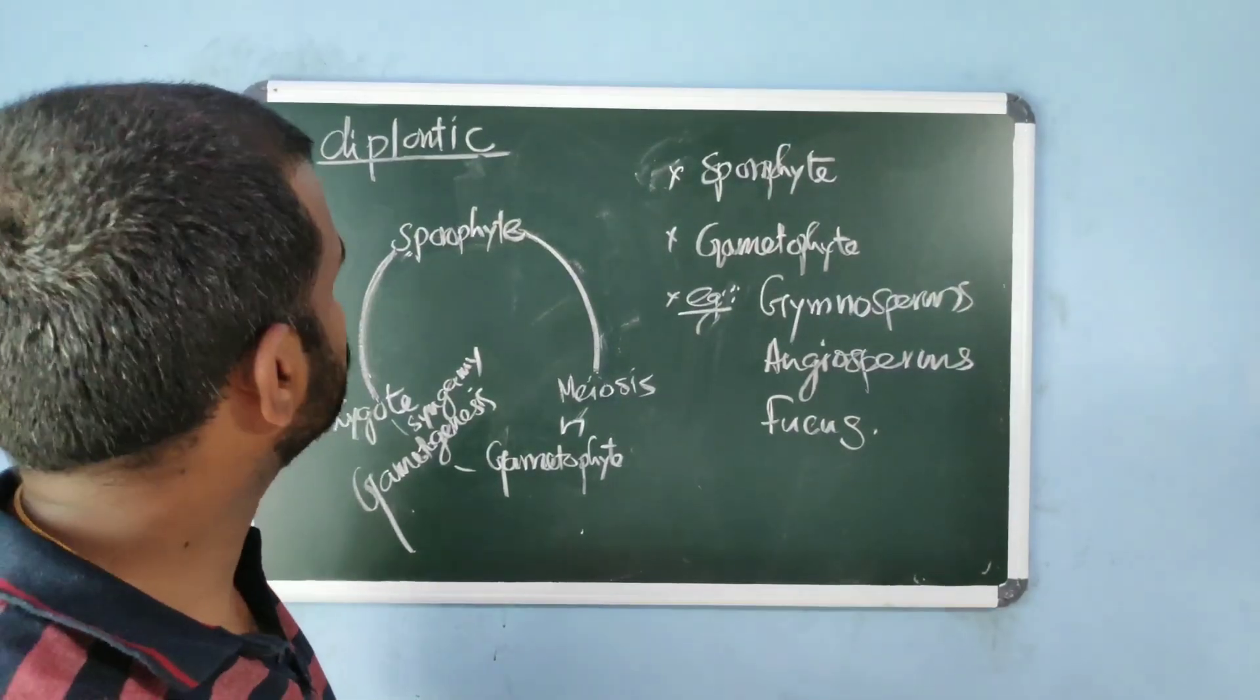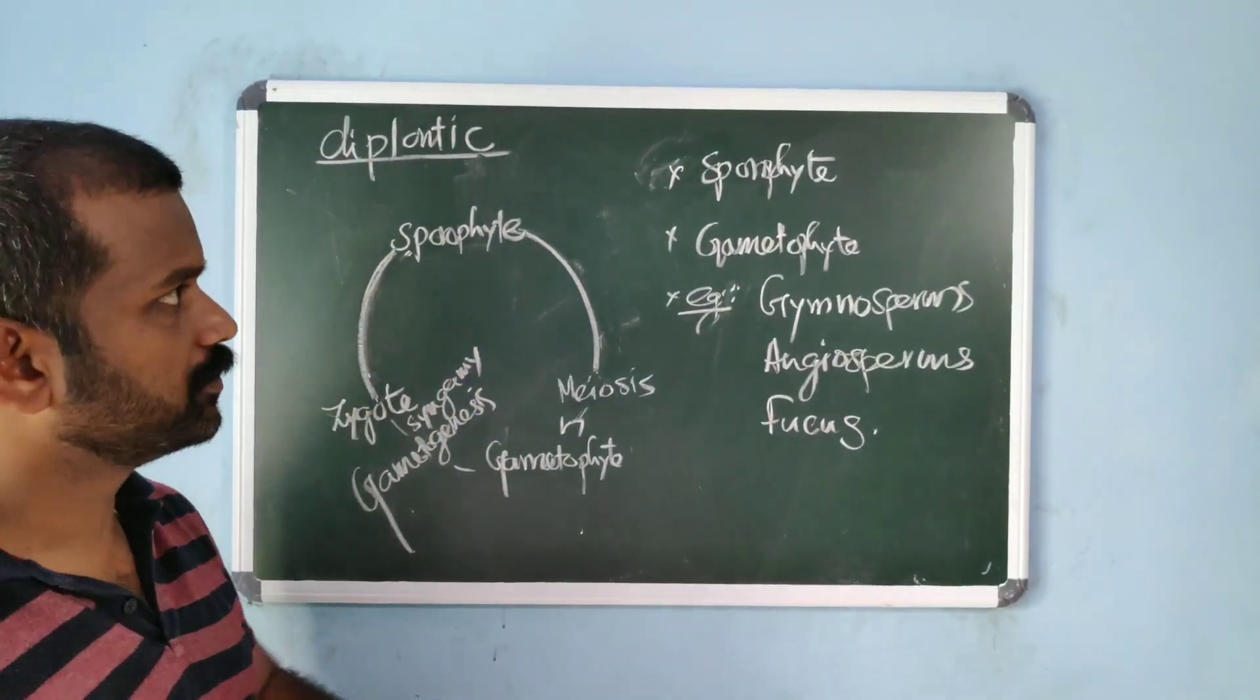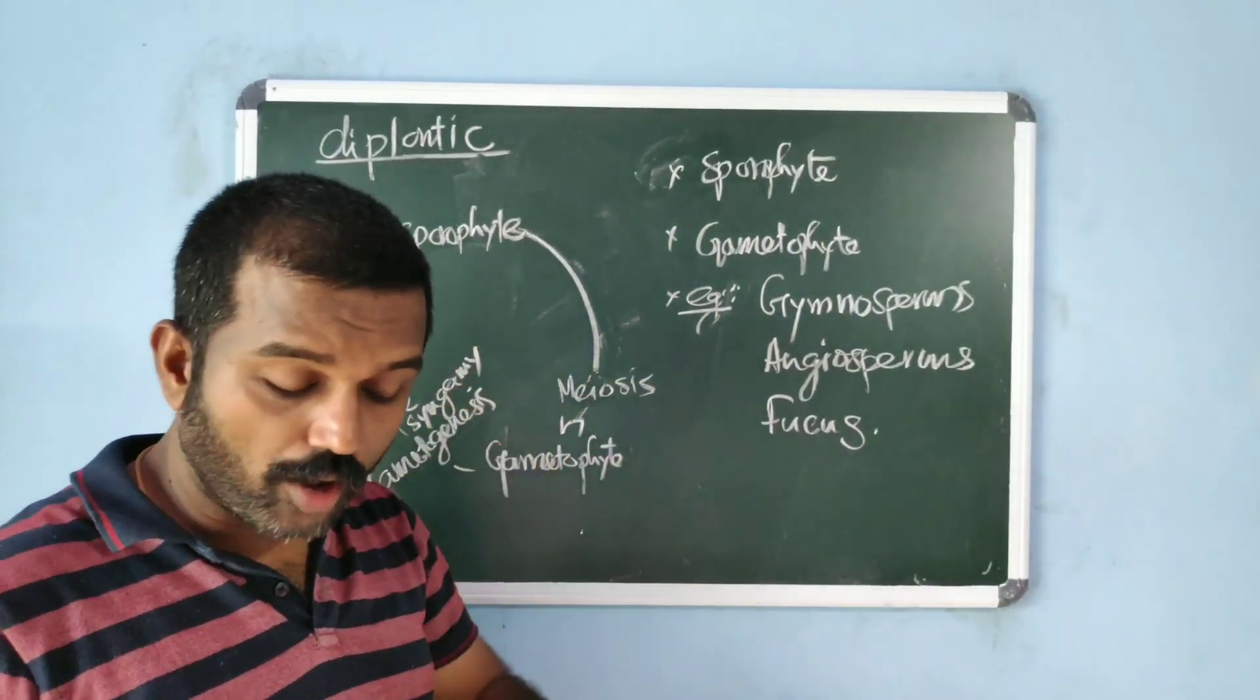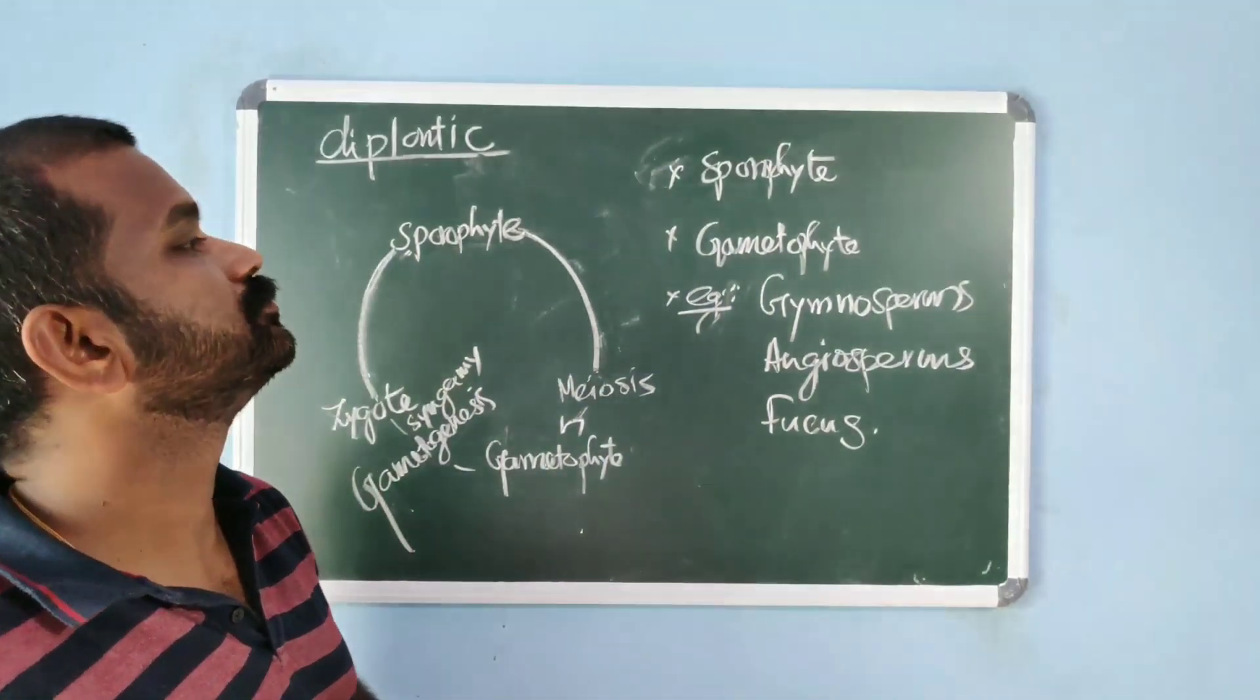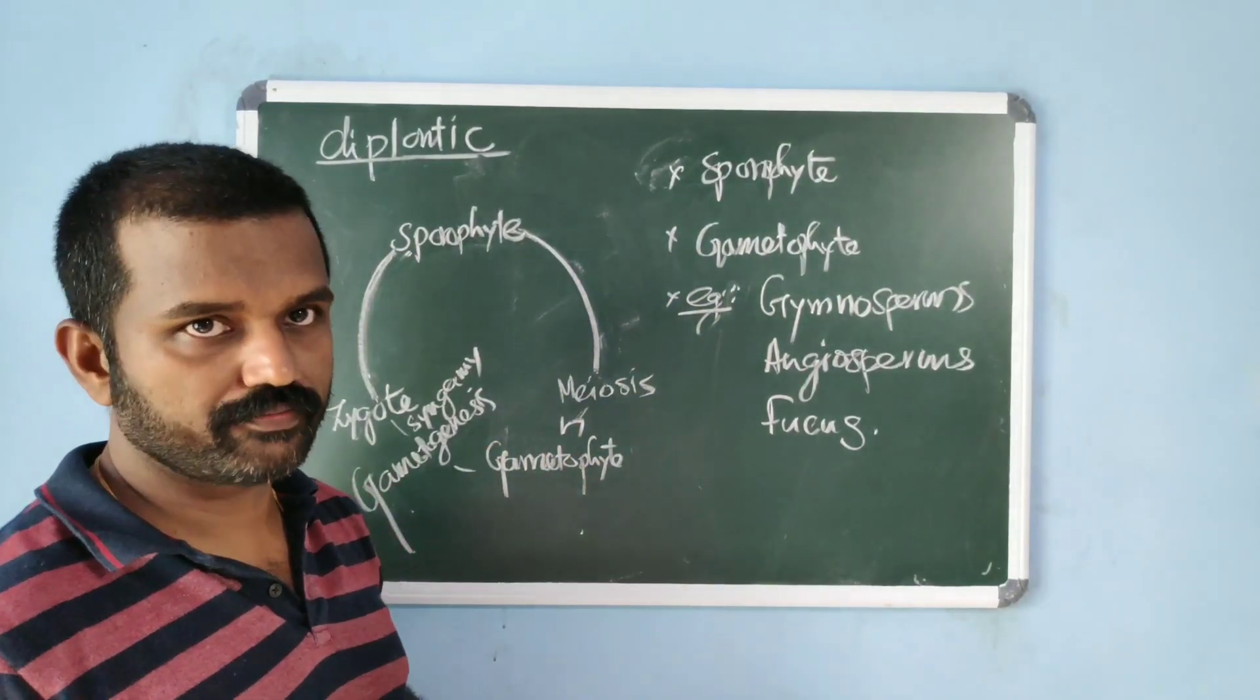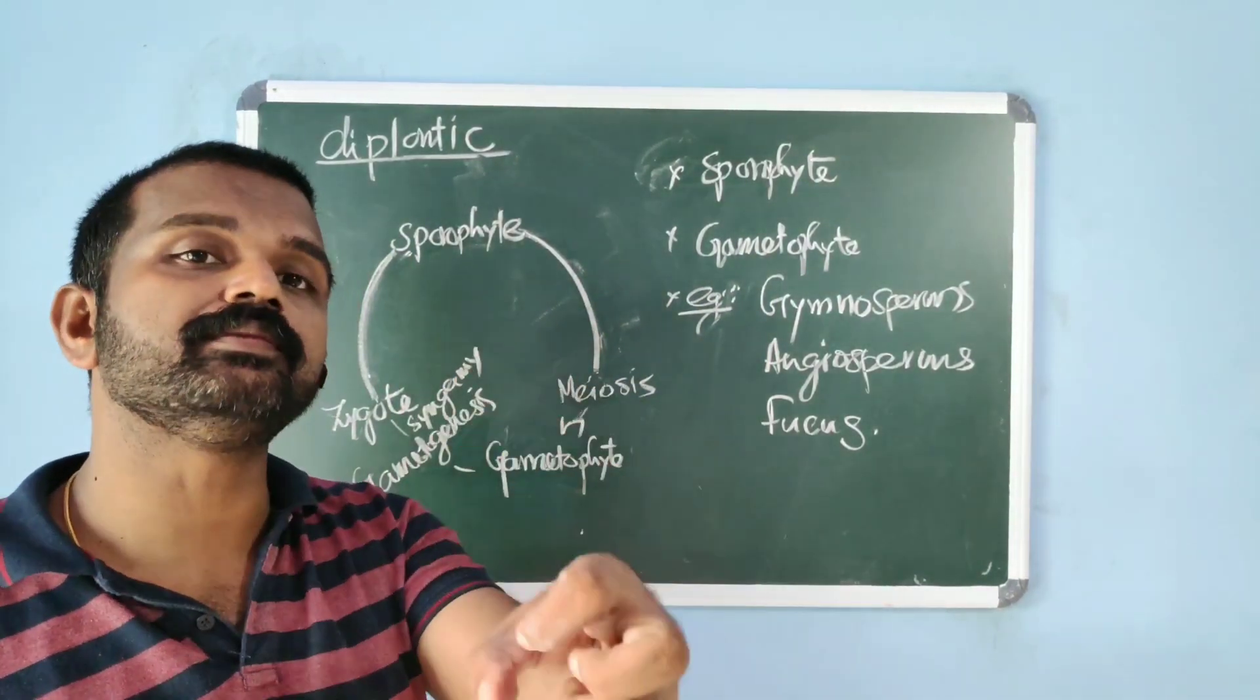Diplontic life cycle. In diplontic life cycle, the main plant body is sporophyte. That is, the dominant plant body is sporophyte, and gametophyte is highly reduced. We can say that its number of cells is limited.